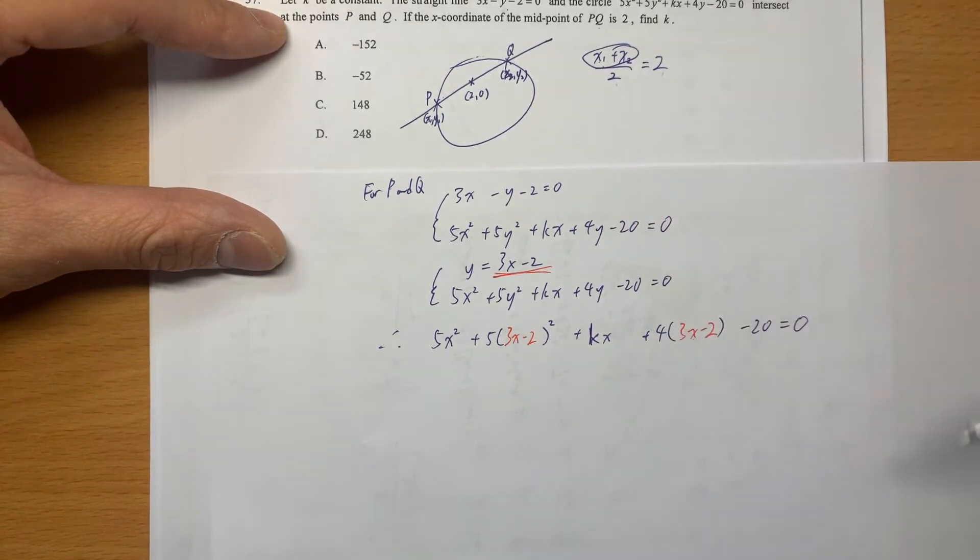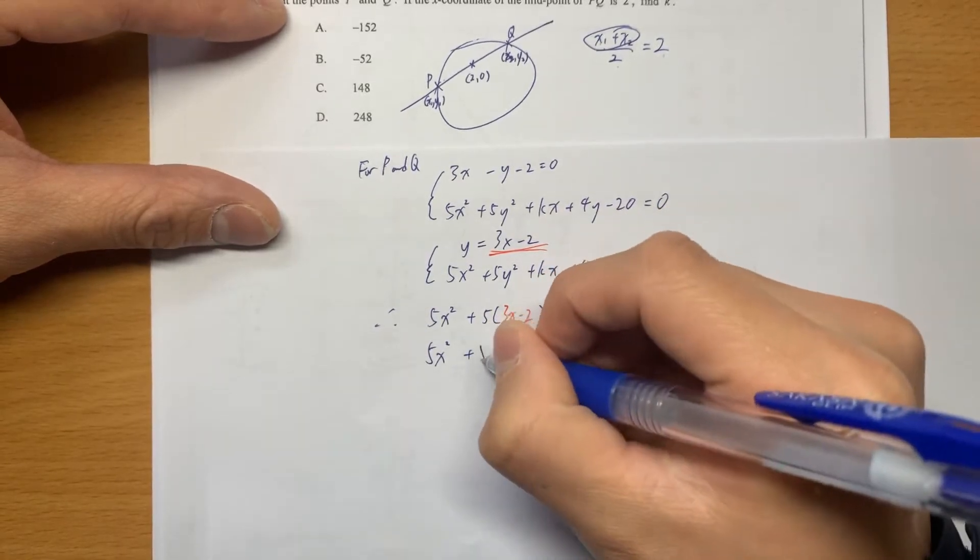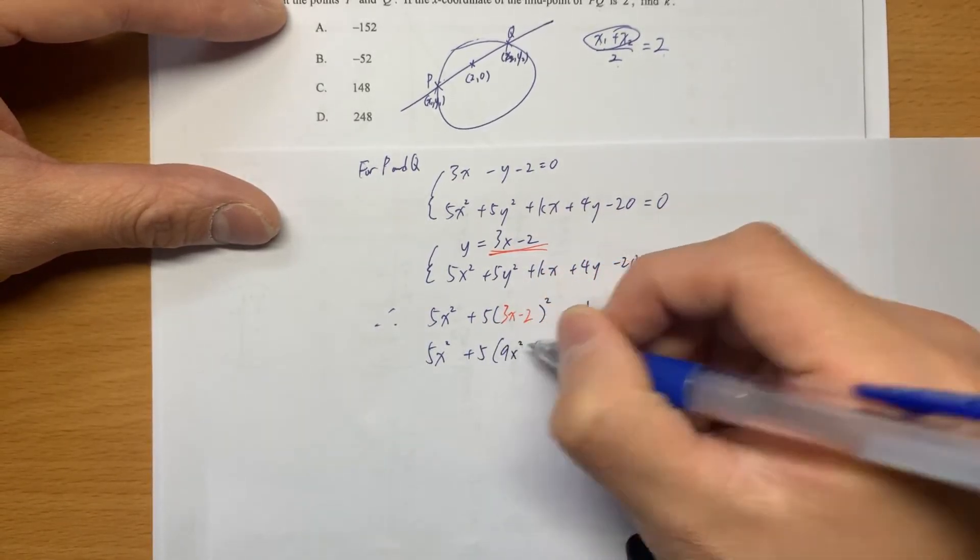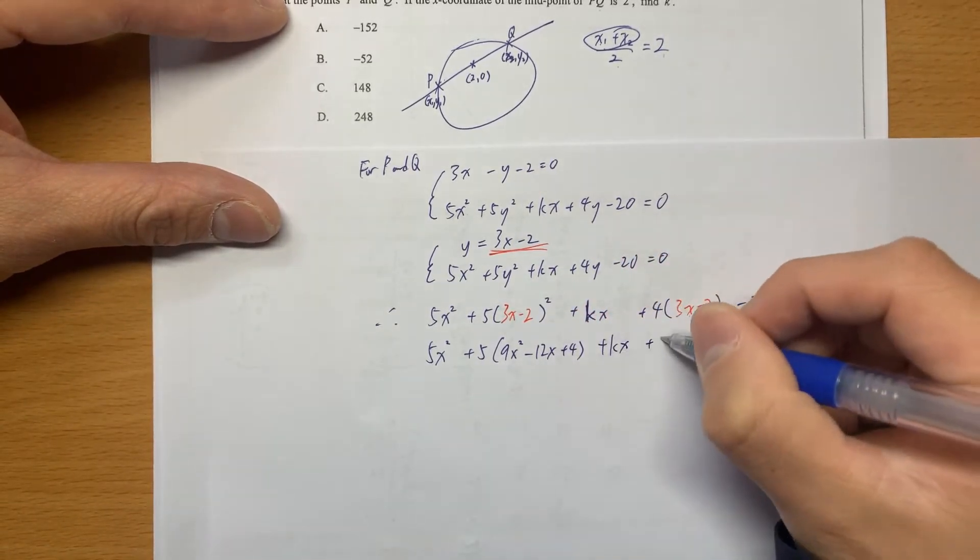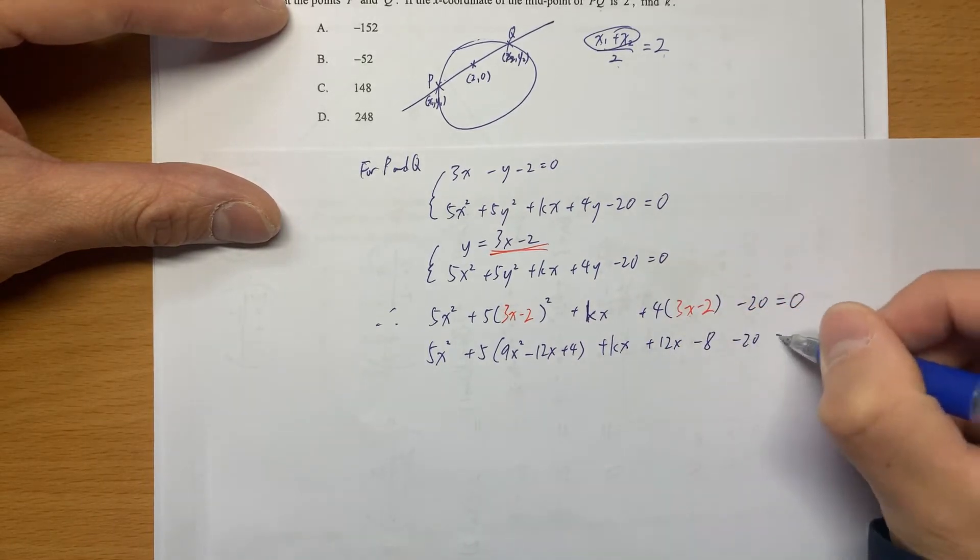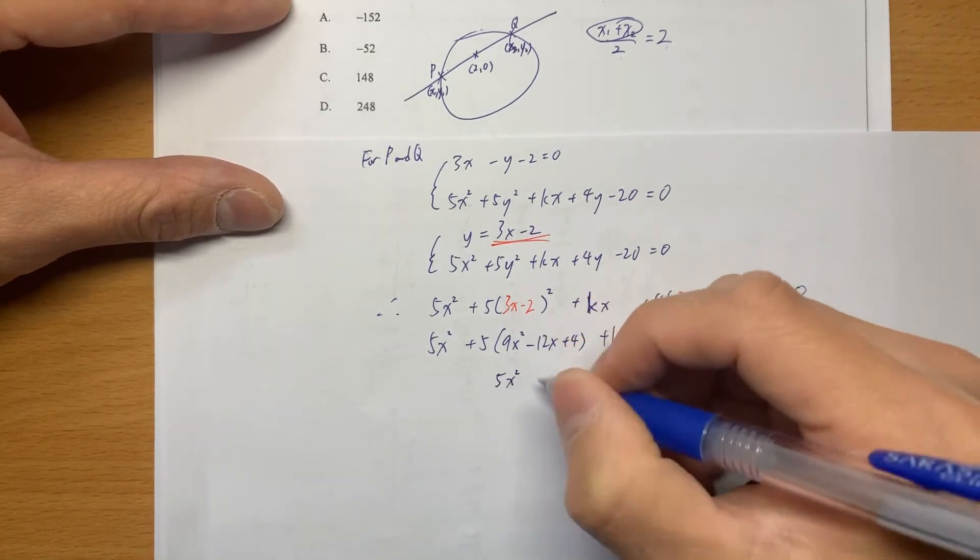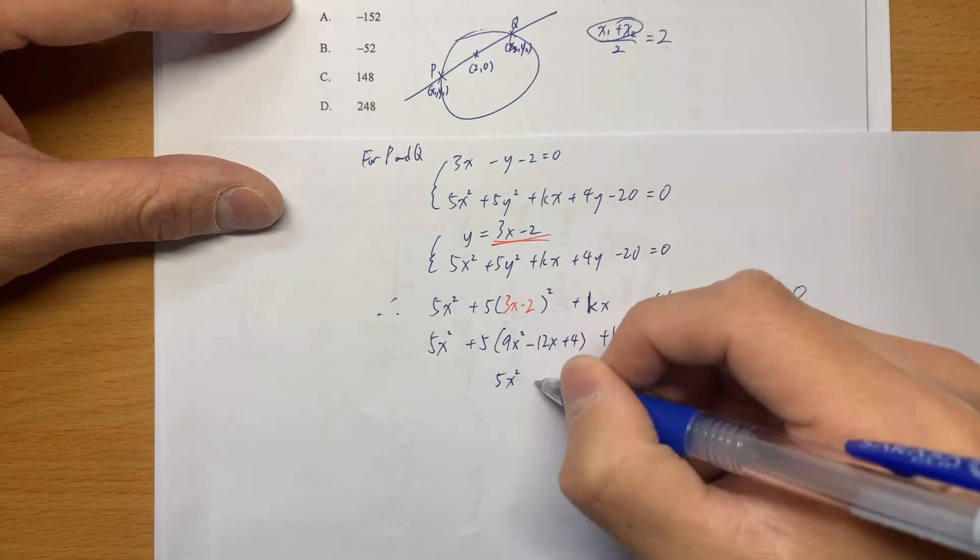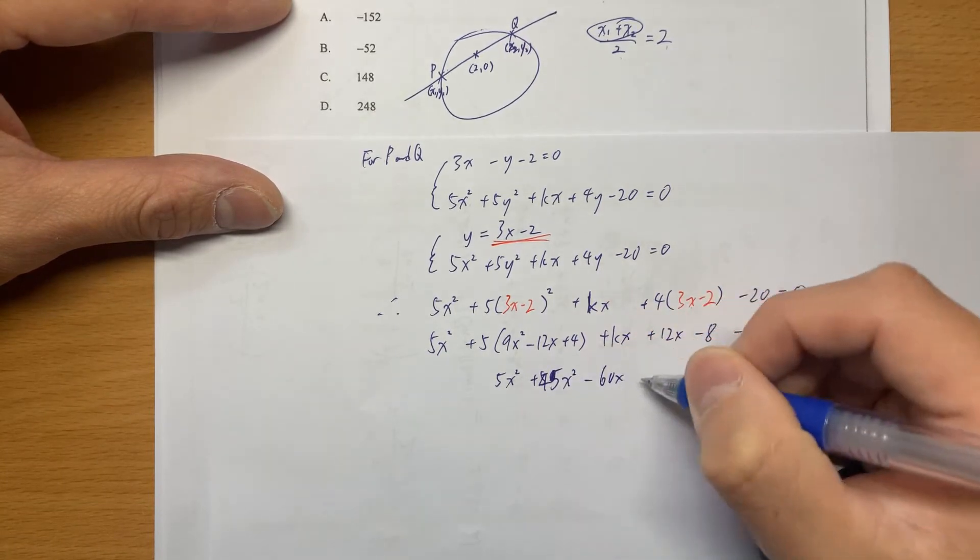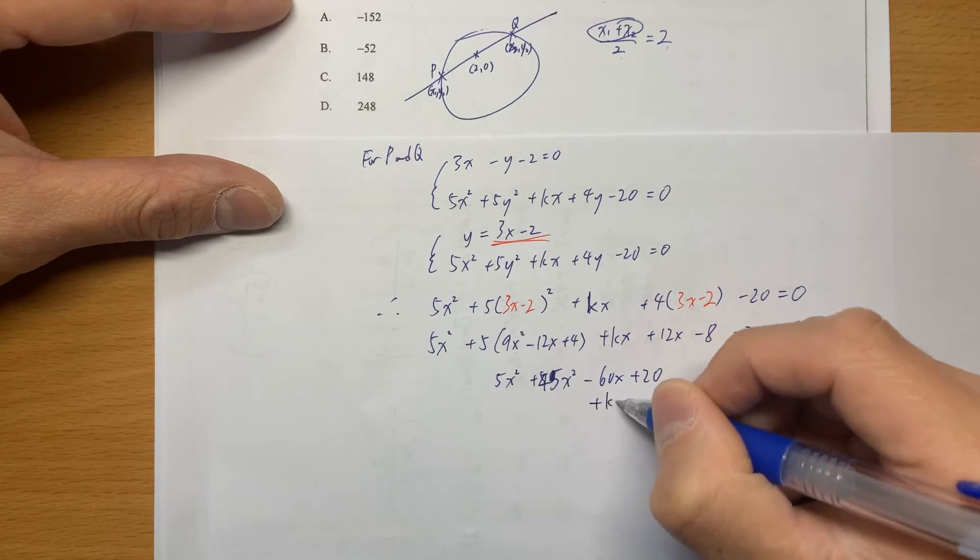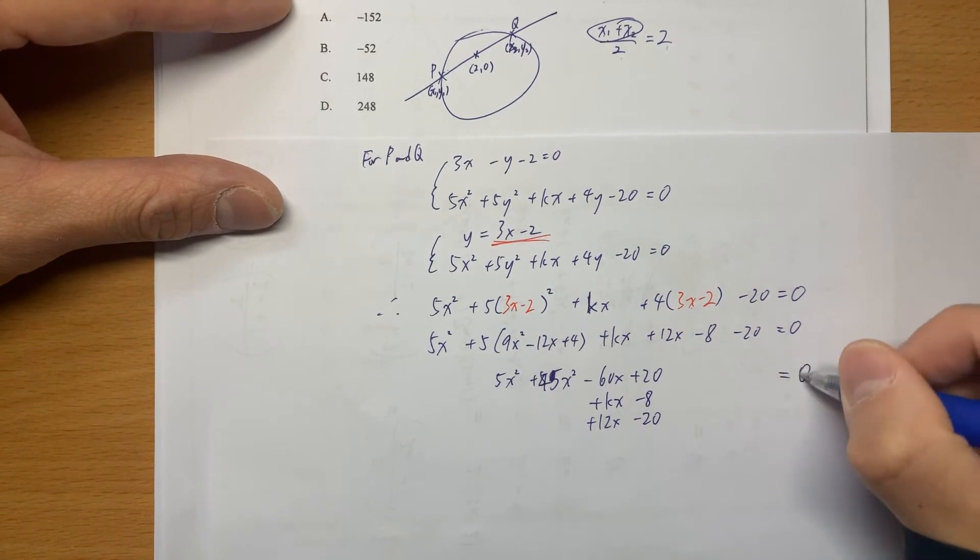Then we can use it directly. So for some students maybe it's difficult for you to expand it carefully. Just try. So 9x squared minus 12x plus 4, and then plus Kx, and then plus 12x minus 8 minus 20 is 0. So again I suggest my students to write everything in multiple rows.